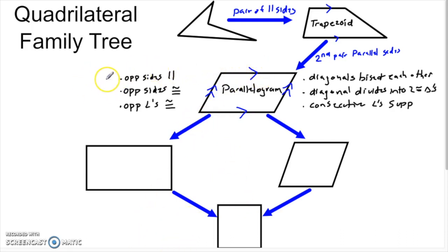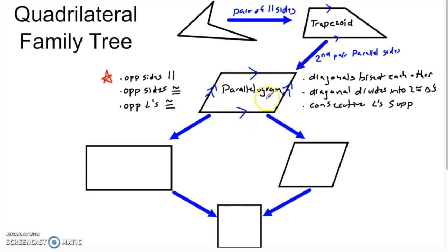I also don't have to prove that the opposite sides are parallel — that's the definition of a parallelogram. We got this shape by asking for quadrilaterals with both pairs of opposite sides parallel, so I don't need to prove it. The four properties I do need to prove are: opposite sides congruent, opposite angles congruent, diagonals bisect each other, and a diagonal divides the shape into two congruent triangles.